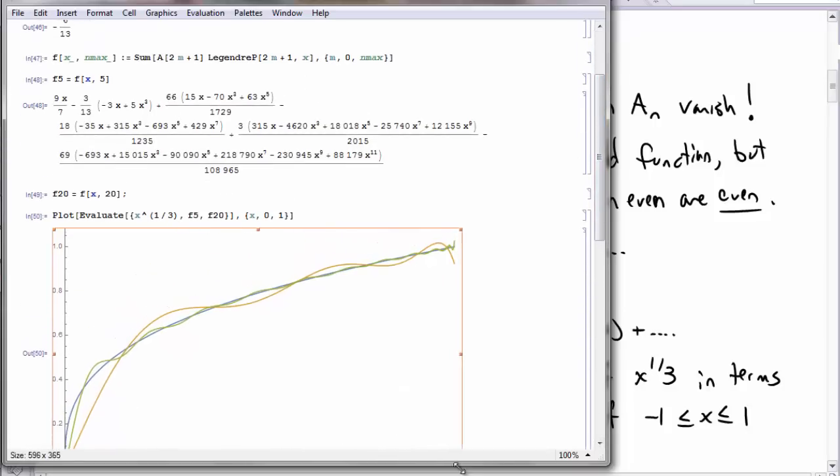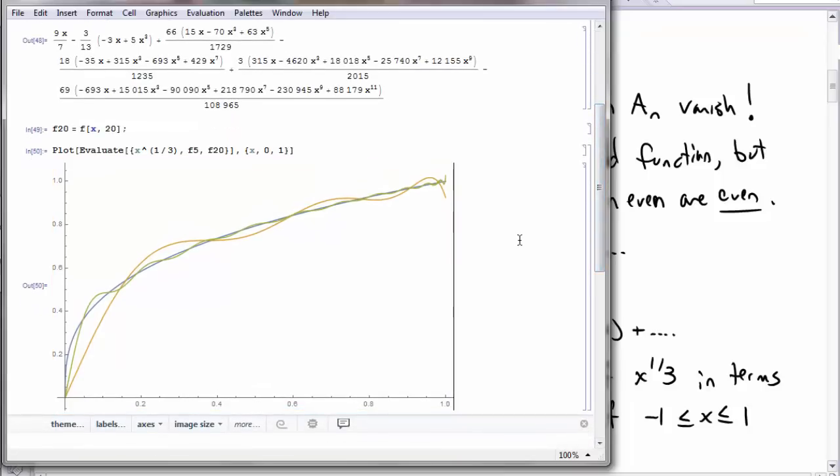So in blue is our original function. The orange is going out to 5 Legendre polynomials. And green is going out to 20. You can see as you add more and more Legendre polynomials, you get closer and closer to the original function that you wanted. So that's the Legendre Fourier series. All right. Thank you.